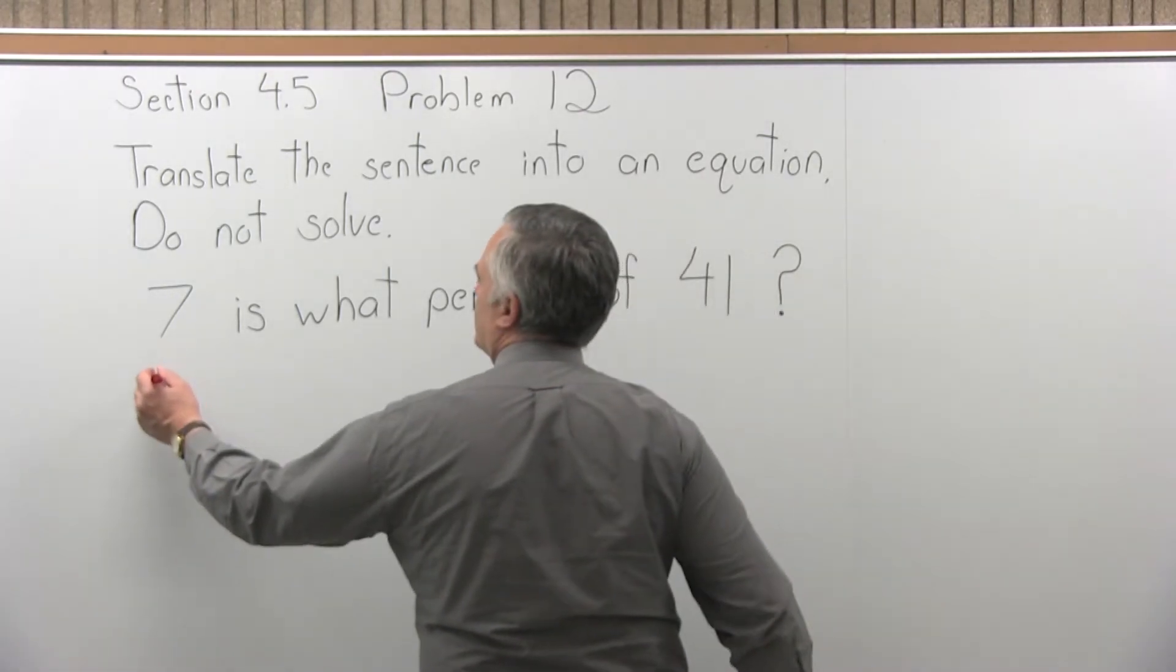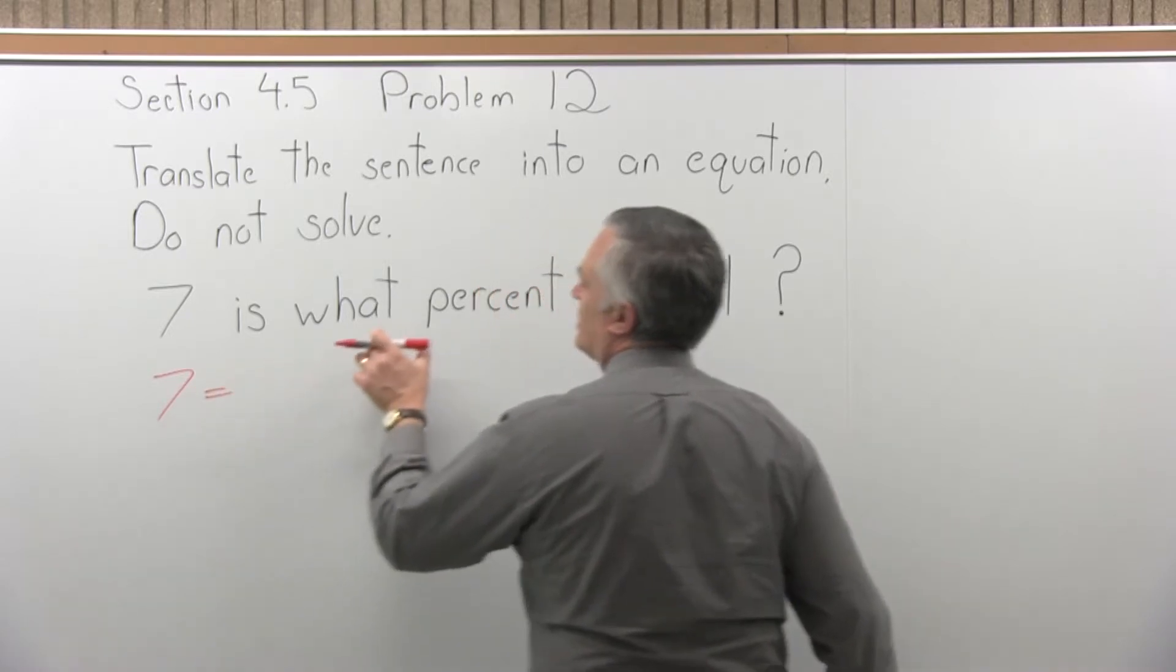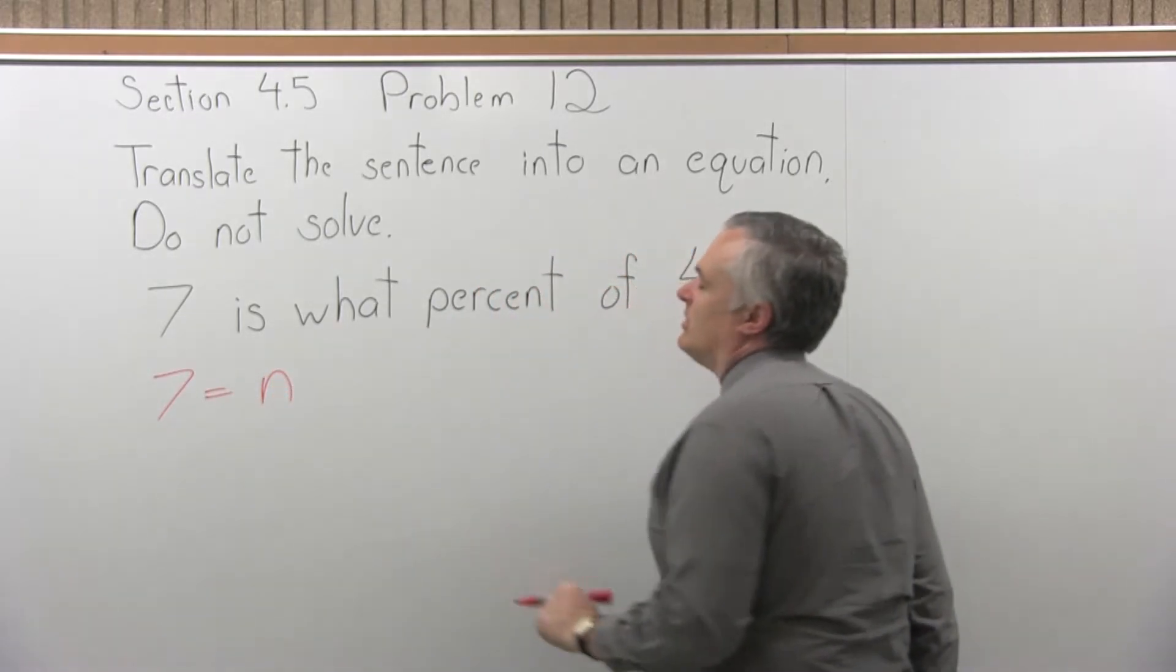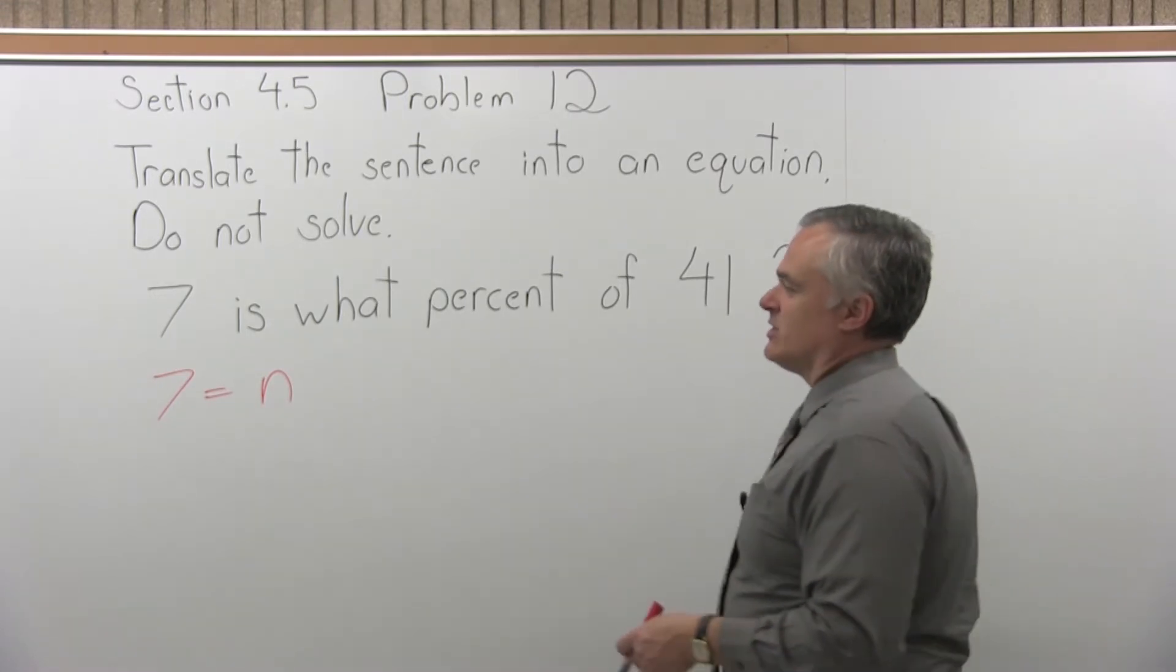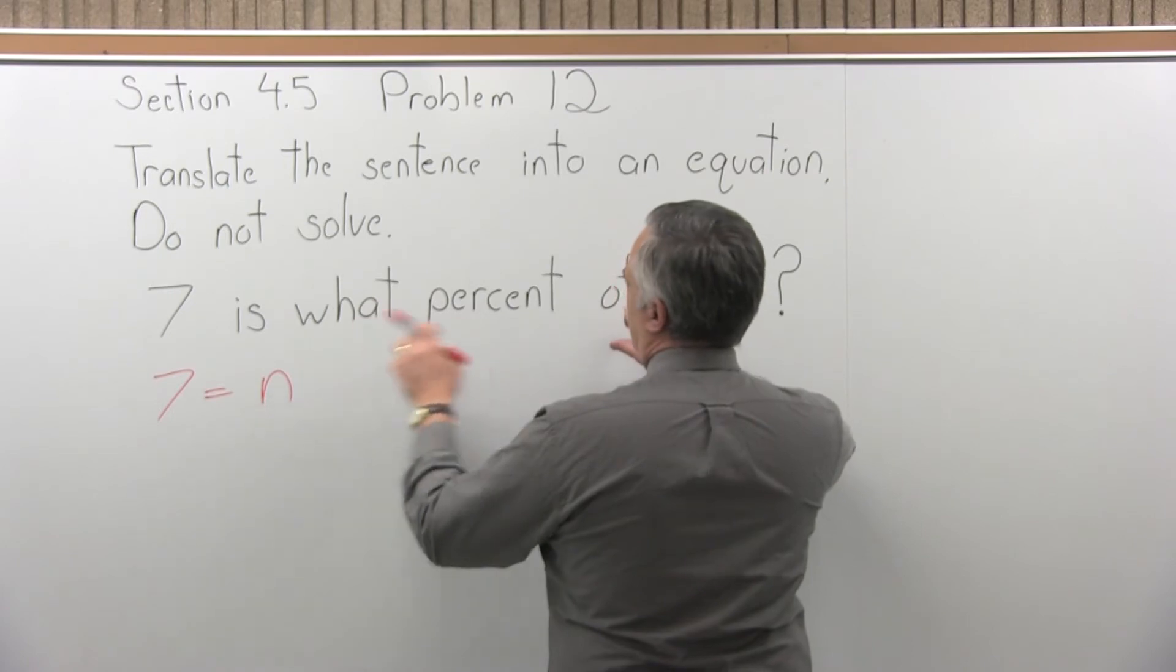So 7 is becomes 7 equals. What percent is unknown, so we use a variable. Some books will use n, some books will use p for percent if percent is what you want to solve for. I'll just use n. What percent is n.